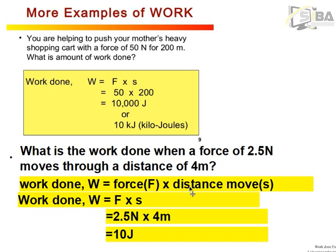From the relationship work done equals force times distance or W equals F times s, we are going to see how we can use that relationship to calculate for work done when other variables are given.